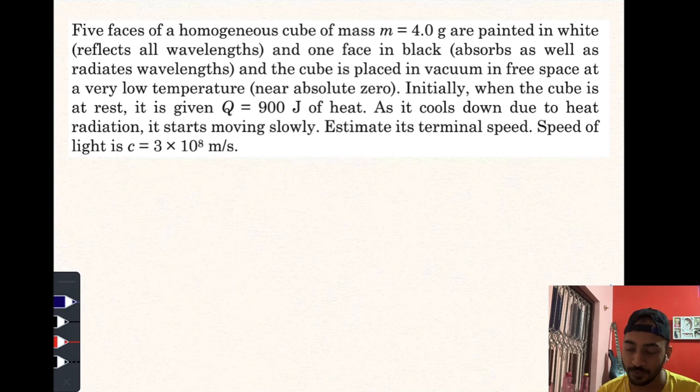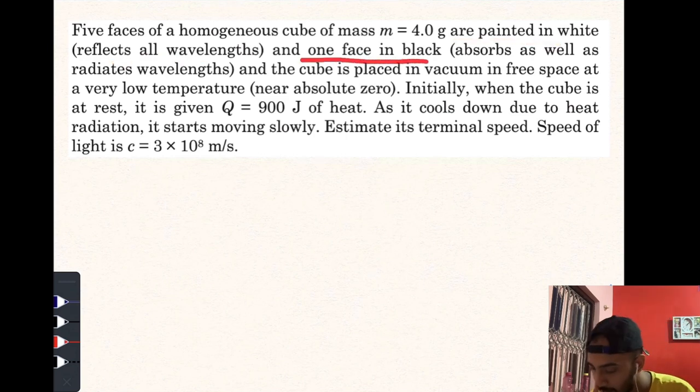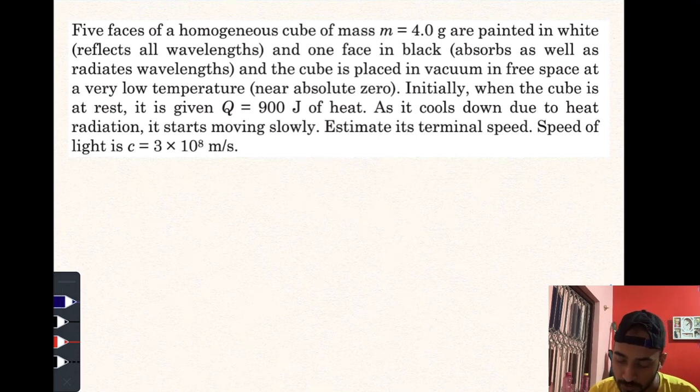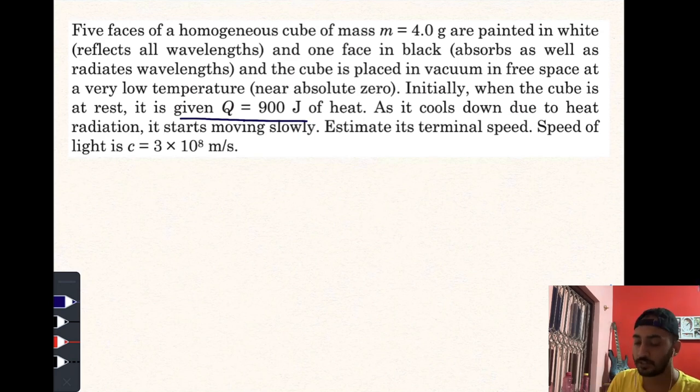In today's video, we have: Five faces of a homogeneous cube of mass m = 4.0 g are painted in white, which reflects all wavelengths, and one face is black, which absorbs as well as radiates wavelengths. The cube is placed in vacuum in free space at a very low temperature near absolute zero. Initially, when the cube is at rest, it is given Q = 900 J of heat. As it cools down due to heat radiation, it starts moving slowly. Estimate its terminal speed. Speed of light is c = 3 × 10^8 m/s.